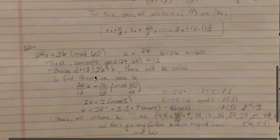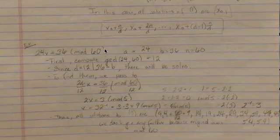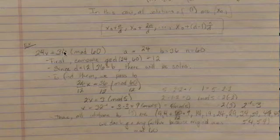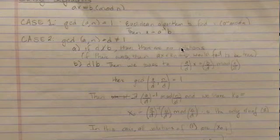For example, in this case down here, the greatest common divisor between 24 and 60 is 12. However, in that case 12 does divide 36. If it did not divide 36, then there would be no solutions.